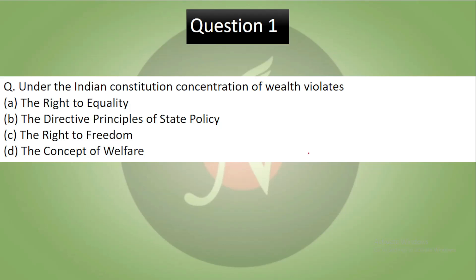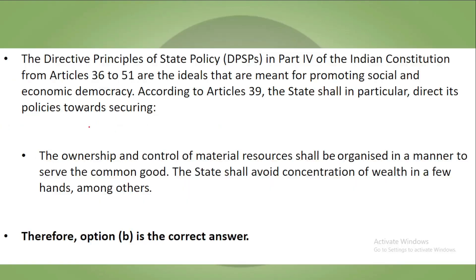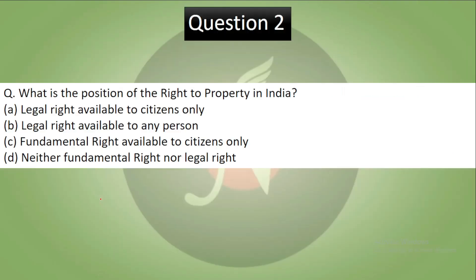The correct answer is B, the DPSP. Articles 36 to 51 are in Part 4 of the Constitution. Article 39 says the ownership and control of material resources shall be organized in a manner to serve the common good and to avoid concentration of wealth in a few hands, among others. So the answer is B.